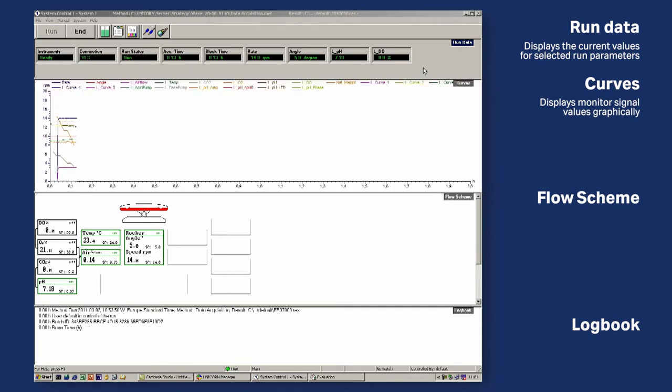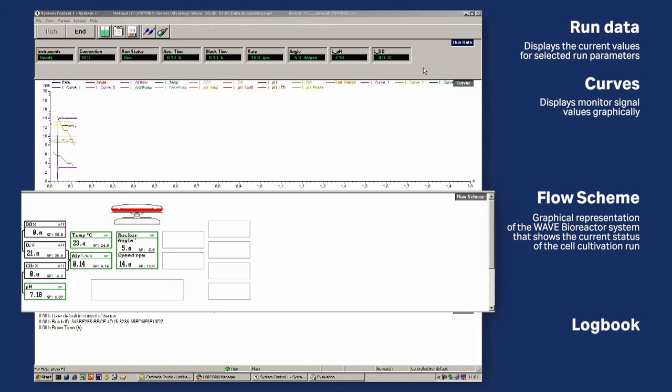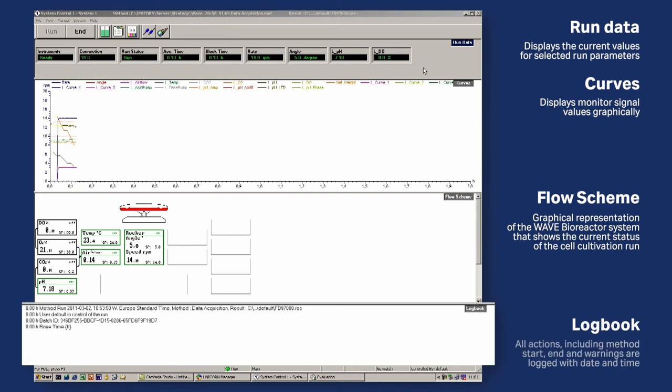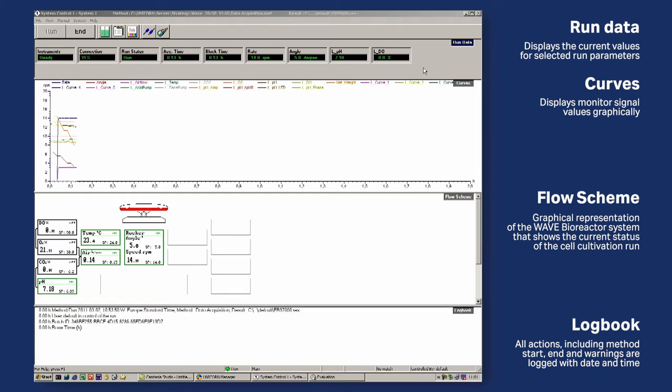The Flow Scheme is a graphical representation of the wave bioreactor system that shows the current status of the cell cultivation run. All actions, including Method Start and End and Warnings, are logged in the Logbook pane with date and time.